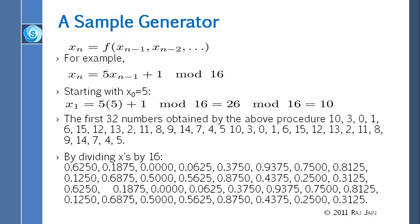The sequence then repeats: 10, 3, 0, 1, 6, 15, and so on — you can see they are cycling. These numbers are between 0 and 15, so you divide by 16 to get numbers between 0 and 1. This sequence will pass statistical tests — it is uniformly distributed and shows no visible correlation. But it is very predictable: if somebody tells me 0, 6, 25, I could tell what the next number would be. So this is not very good for cryptography.